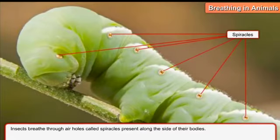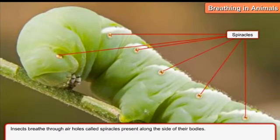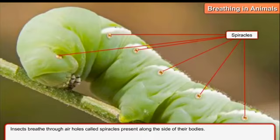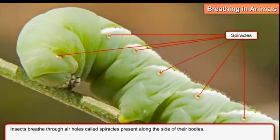Insects breathe through air holes called spiracles, present along the side of their body — as you can see in this picture. یہاں پہ بتایا ہے کہ insects — مطلب جو کیڑے ہوتے ہیں — وہ air holes کے ذریعے سانس لیتے ہیں. یہ چھوٹے چھوٹے holes ہوتے ہیں جو ان کی body کے اوپر present ہوتے ہیں، جنہیں ہم spiracles کہتے ہیں.